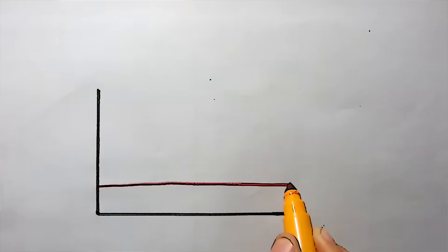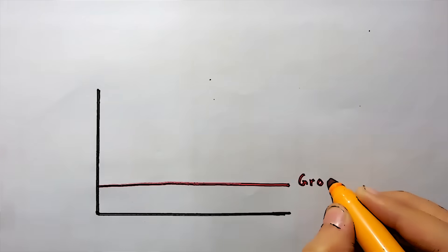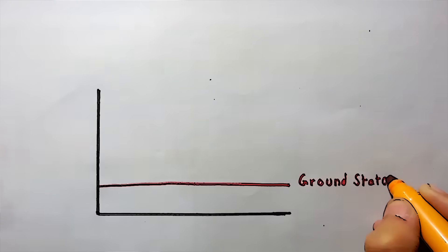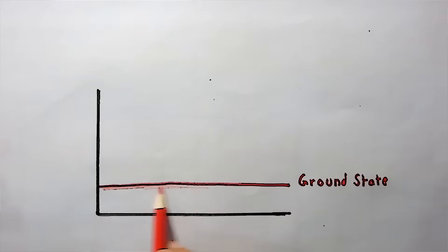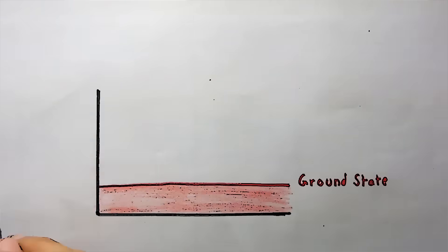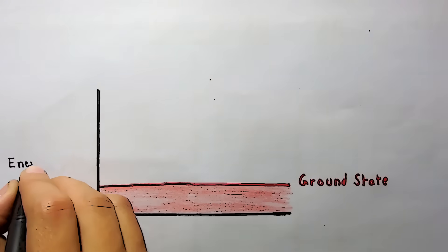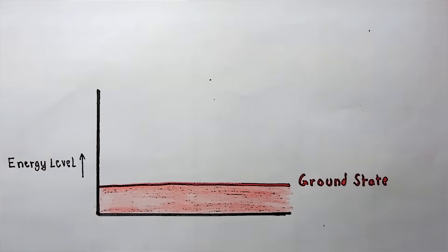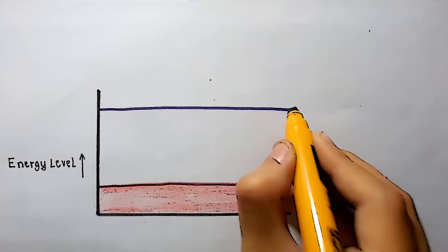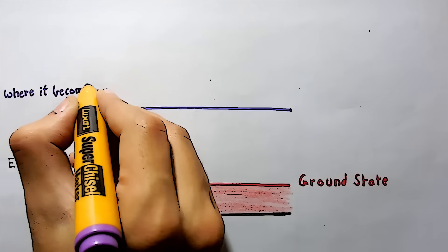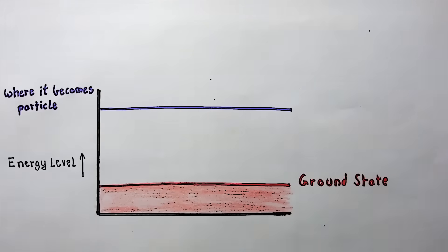To extract a particle from a field, you need to give the field energy. If you give it enough energy, the field will go to a higher energy state. These states are what we interpret as particles. The point in the field where you give it energy will look like a particle.